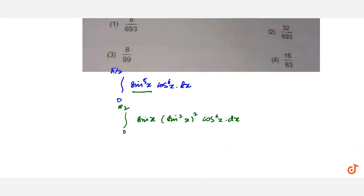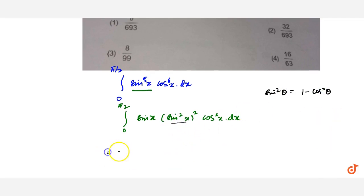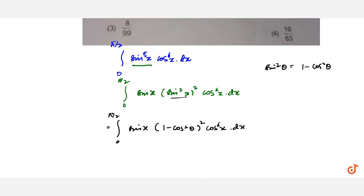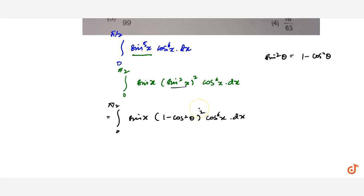Now we know that sin squared theta can be written as 1 minus cos squared theta. So we replace sin squared x to get the integral from 0 to π/2 of sinx into (1 minus cos squared x) whole squared into cos raised to power 6x dx.